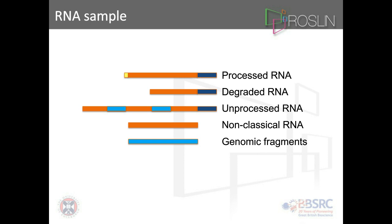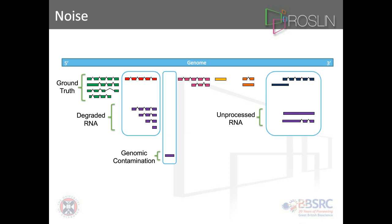What that looks like is: degraded RNA produces what I call a 5' exon cascading event, where you get reduced representation on the 5' end but the 3' end all matches, so you don't actually get the true 5' end for that transcript. Genomic contamination typically looks like a single exonic gene somewhere randomly within the genome. Unprocessed RNA will either have all introns intact or some introns intact — sort of mid-processing essentially.